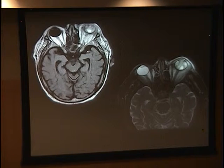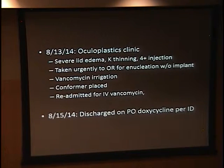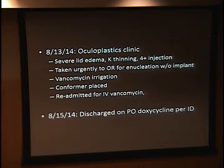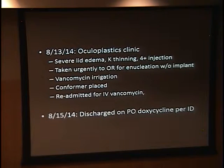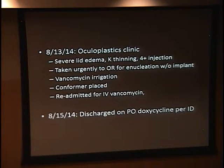MRI T2 FLAIR showed hyperintensity all the way back to the orbital apex, debris inside the globe, and fat stranding pre- and post-septally. About four to five days later in oculoplastics clinic, with severe lid edema, corneal thinning, and significant injection, he was urgently taken to the OR for enucleation without implant placement. The orbit was vigorously irrigated with vancomycin. A conformer was placed. He was readmitted for two more days of IV vancomycin, then discharged on doxycycline for one week. About a week after surgery, pain was much improved with no sign of spread or infection.